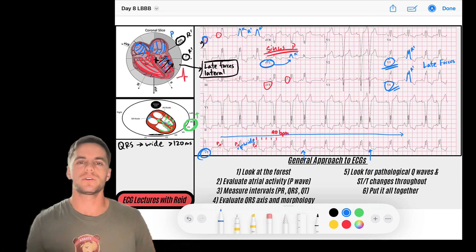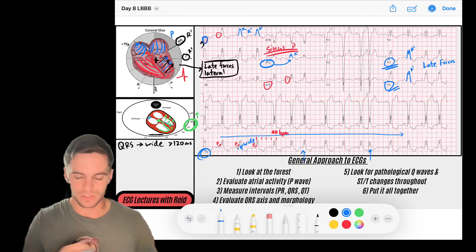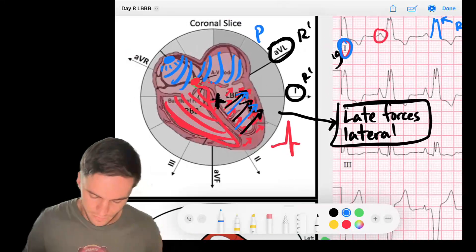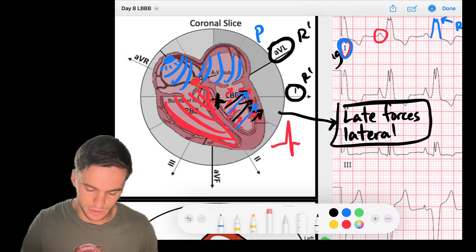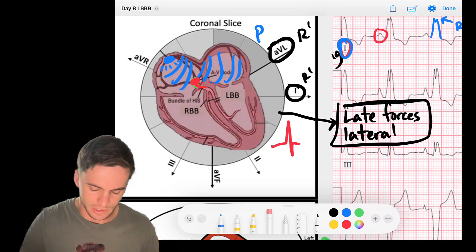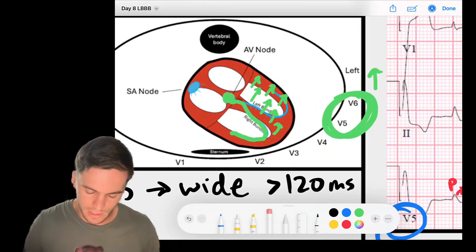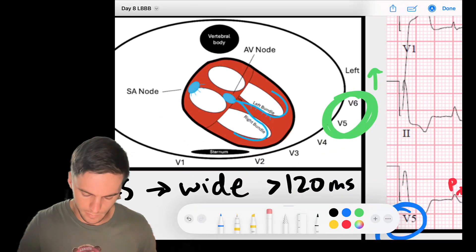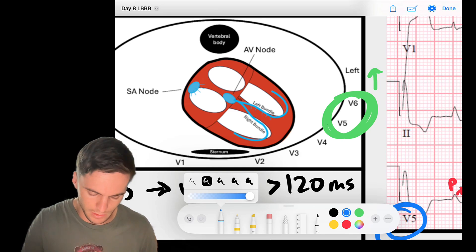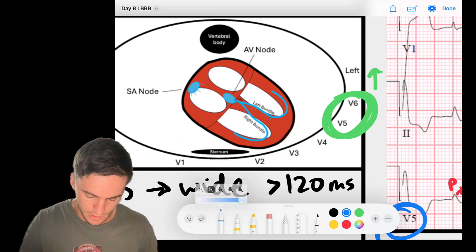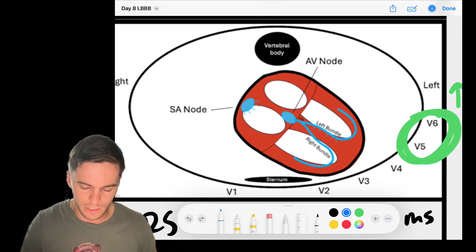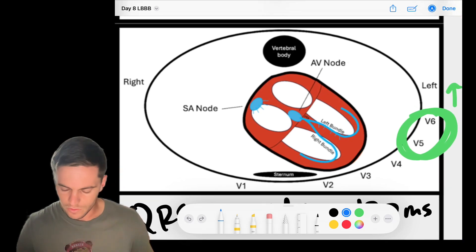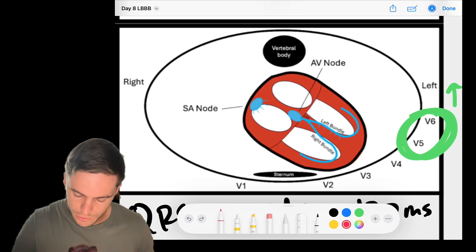Now there's one more concept that I want to talk to you about with a left bundle branch block that I think is just fascinating. So in normal ventricular depolarization, we're going to come here. In normal ventricular depolarization, if I zoom in on my transverse leads, notice that the interventricular septum, kind of highlighting in red, that's my interventricular septum.